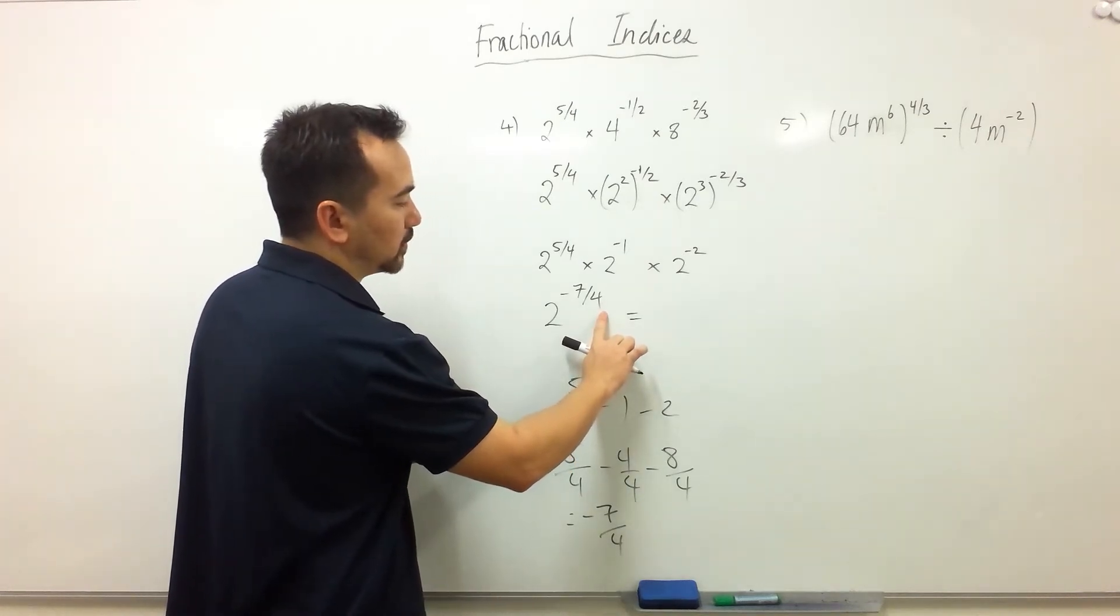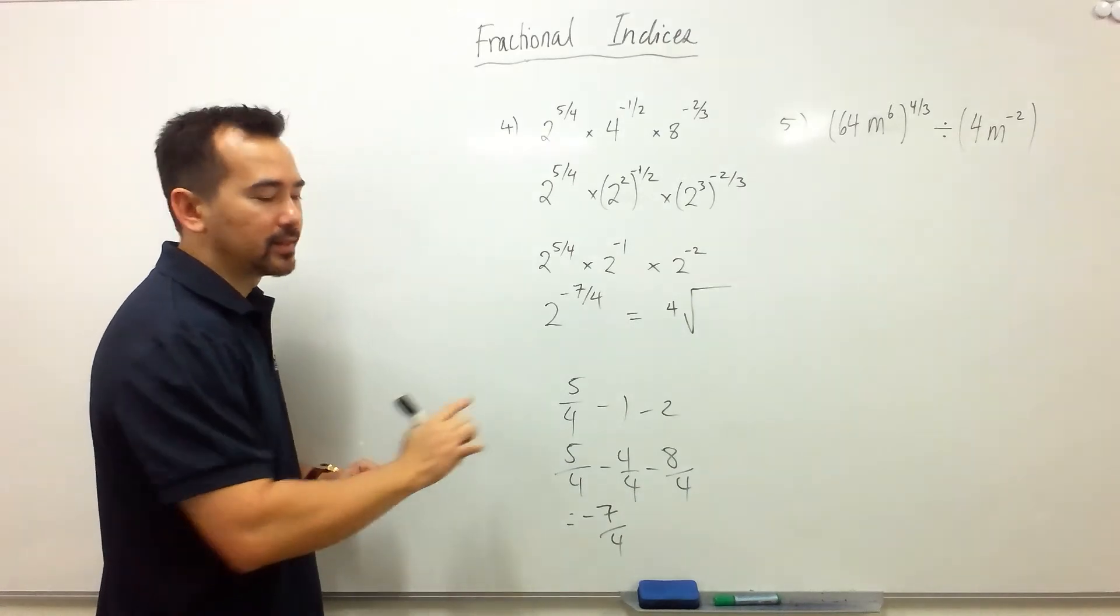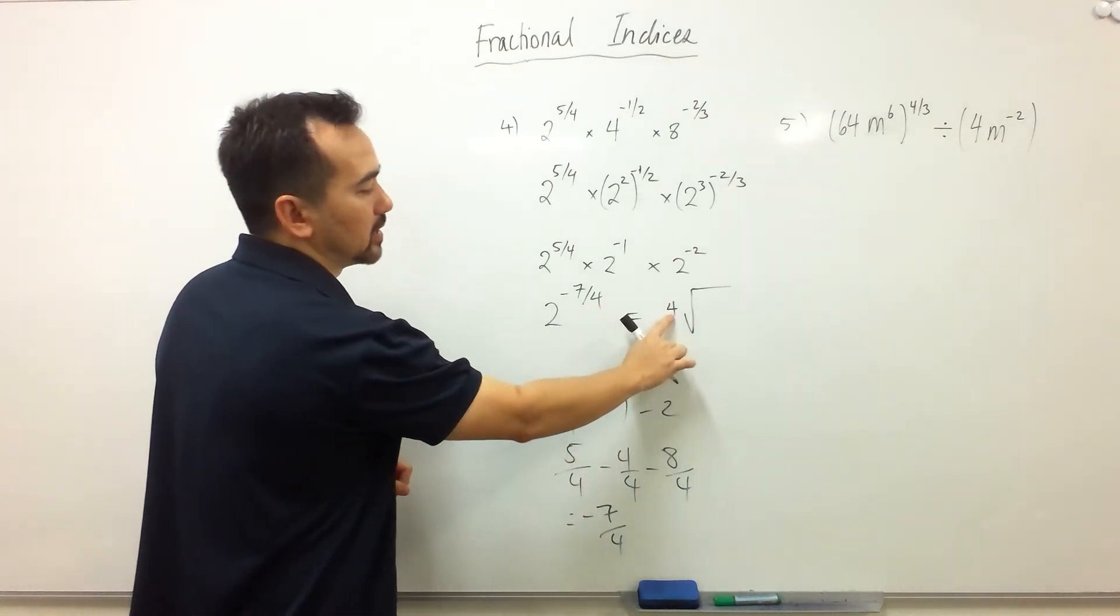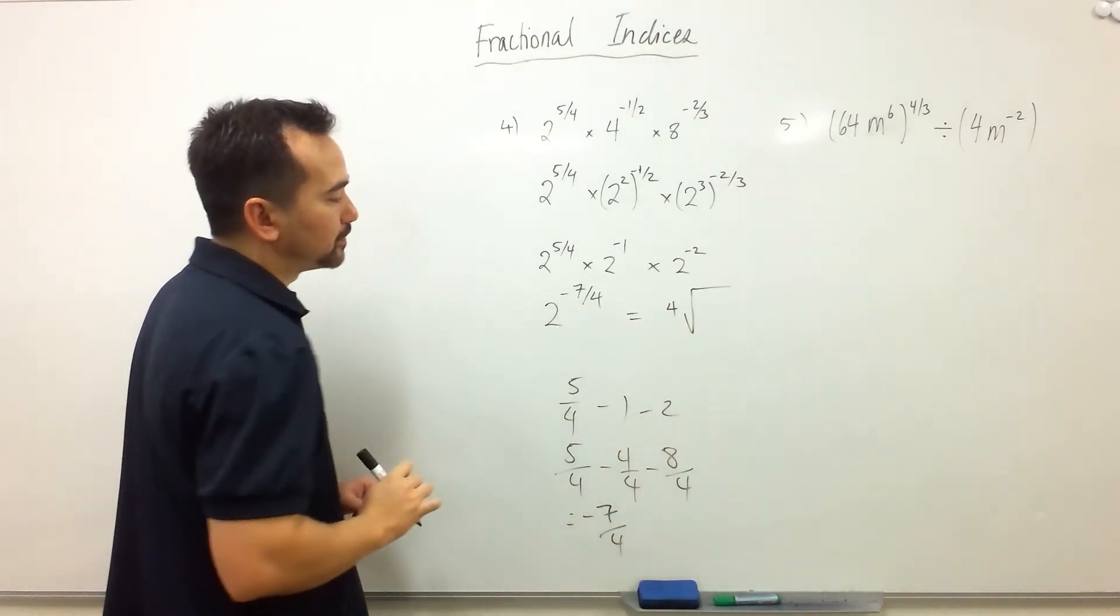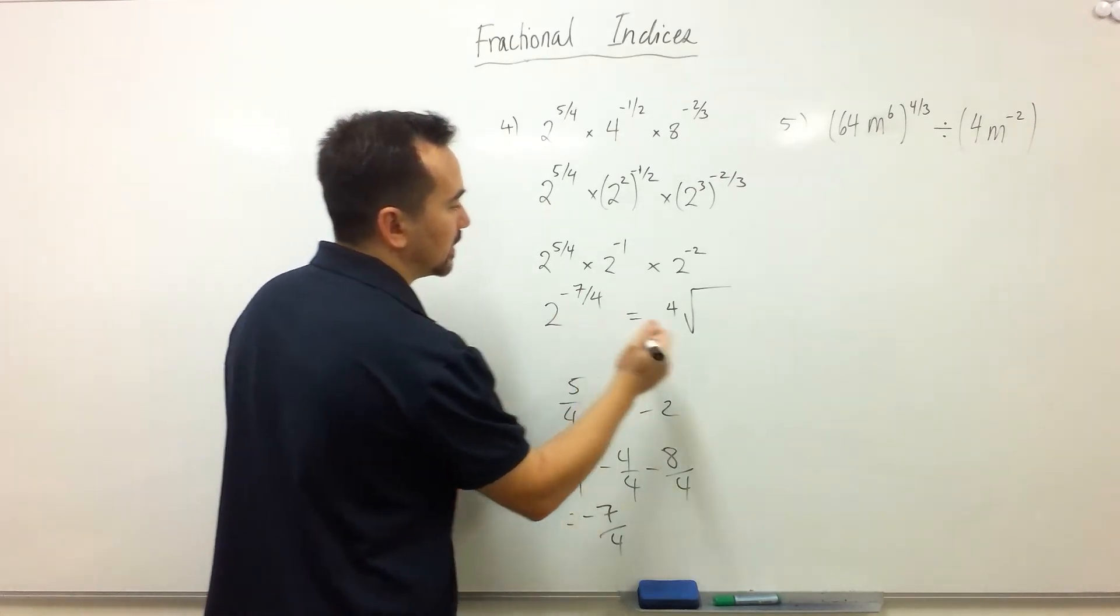The 4 is our root, so this is like the fourth root. The denominator always represents what that small number is. And then we have 2 to the power of negative 7.